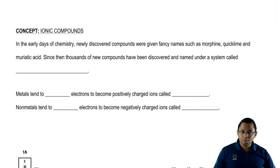In the advent of chemistry, in the beginnings of chemistry, there are common names that were given to tons of different compounds: morphine, quicklime, what have you.